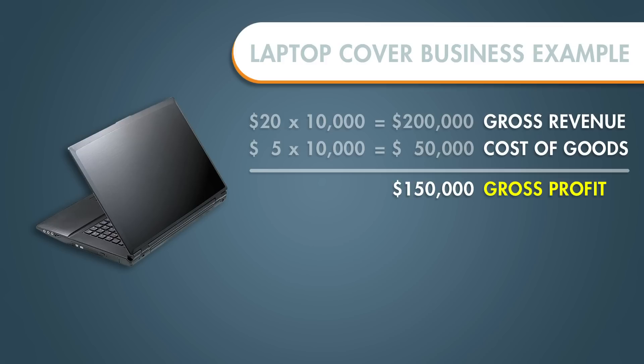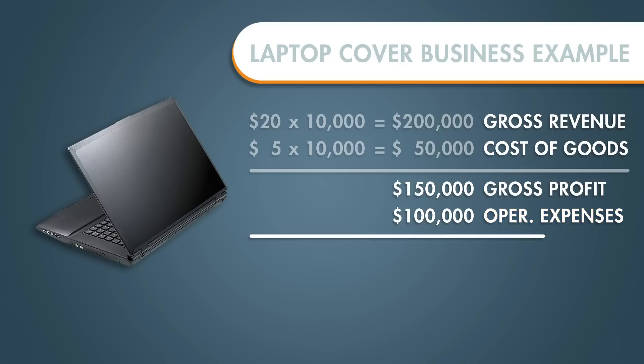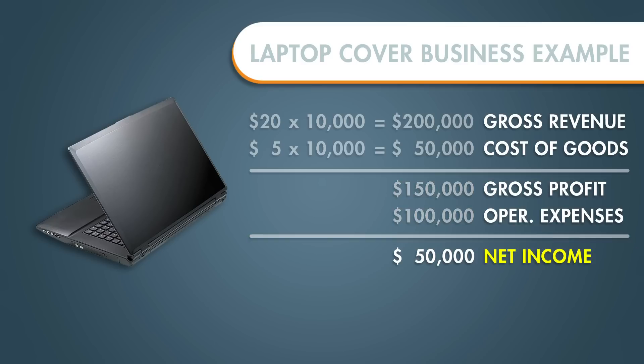In addition, throughout the year we paid for rent, salaries, and marketing expenses — that all came out to $100,000. Now we have $50,000 of net income, which is what we have to keep or reinvest in the business. And those are the five key components that make up any P&L and any income statement.